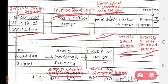Then the class A AF amplifier — its function is to increase the strength of the signal. Then audio processing and filtering — the function is to remove unwanted signal, error, or distortion. So filtering removes unwanted signals or errors or distortion, and the amplifier amplifies and increases the signal strength.